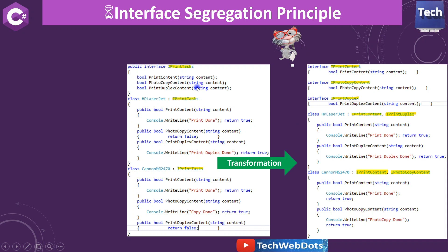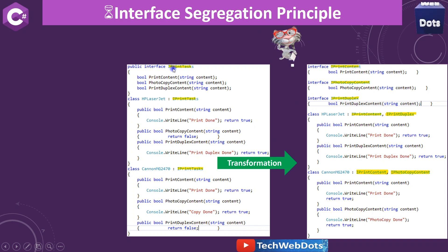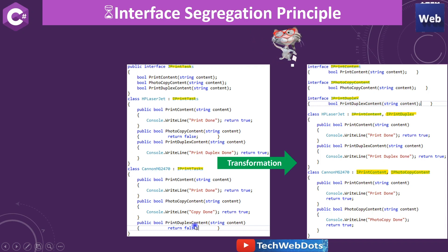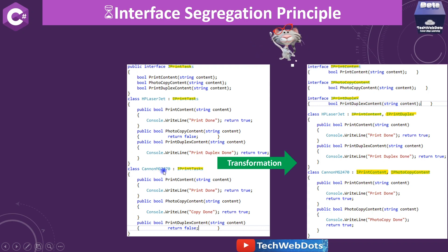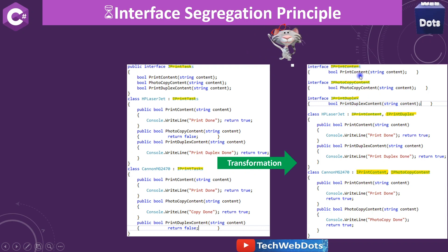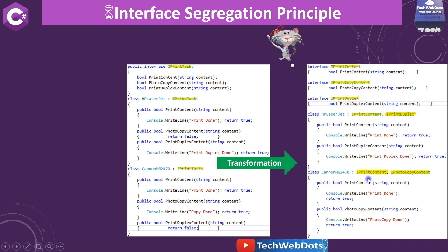In a previously recorded session I explained a different example. Initially there is one interface, IPrintTask, containing three things: PrintContent, PhotocopyContent, and PrintDuplexContent. For example, an HP LaserJet printer cannot do photocopy, and a Canon printer cannot perform duplex printing. If you try to implement this interface for both, you have to provide dummy implementations. So we can transform it by dividing IPrintTask into three smaller interfaces: IPrintContent, IPhotocopyContent, and IPrintDuplex, and implement them accordingly where required.